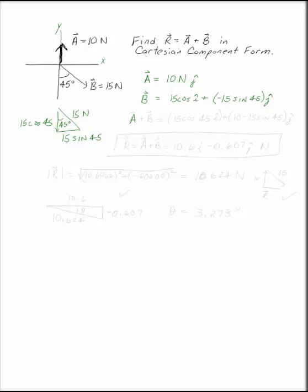Add these up. Add the I's, add the J's. A plus B is 15 cosine 45 I plus 10 minus 15 sine 45 J. And plug that into your calculator. The resultant of A plus B is 10.6 I minus 0.607 J Newtons.